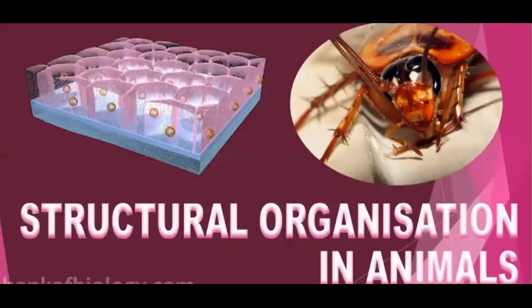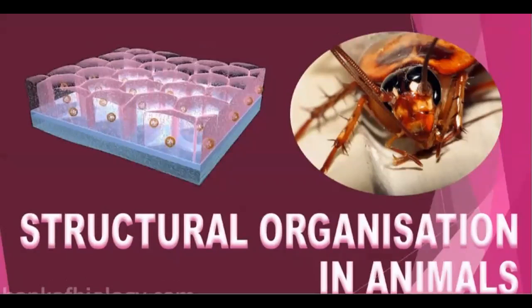Today we are going to start with a new chapter: Structural Organization in Animals. This is part of a new unit called Structural Organization in Living Organisms, which includes four chapters. The first was plant tissue, then morphology of plants, and then structural organization in animals. The first two chapters in CBSE cover structural organization in plants.